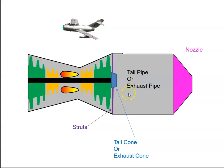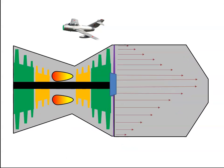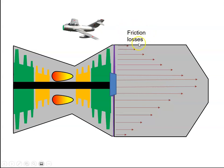The tail pipe delivers the air from the rear of the turbine to the nozzle. If we look at the air coming through the tail pipe, at the edges the air will be in contact with the casing and there will be some friction losses. The faster the air is travelling, the greater the friction losses. This is not good because we're losing energy — that friction will be felt as heat — and we want all of that energy to go out the nozzle.